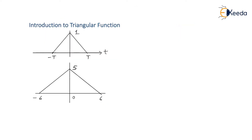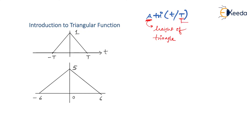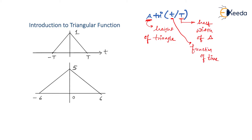We will start with a triangular function. This triangular function is quite new for you, so I will explain how to express it mathematically. A standard triangular function is mathematically expressed as A·tri(t/T), where TRI stands for a triangular function. A stands for the height of the triangle, capital T indicates the half width of the triangle, and small t indicates it is a function of time.